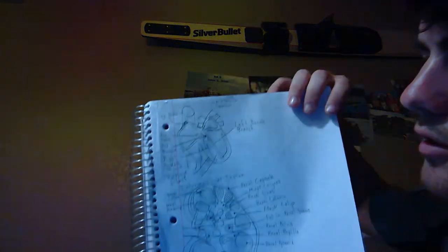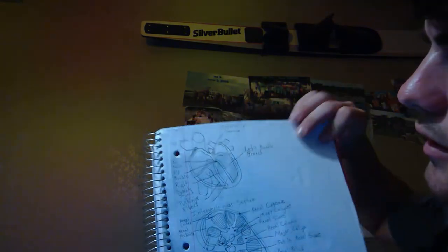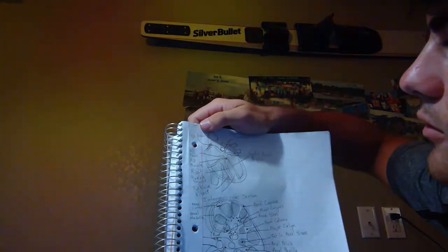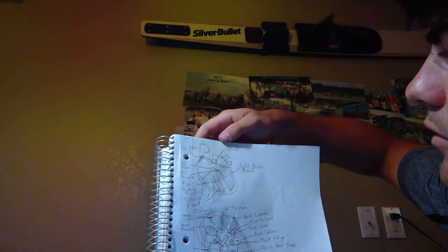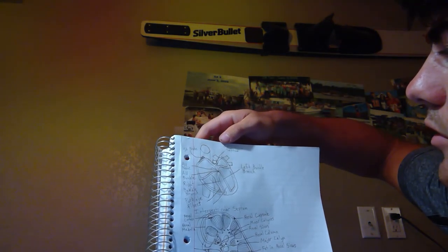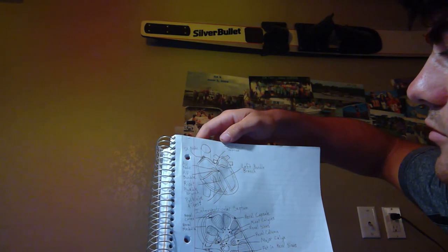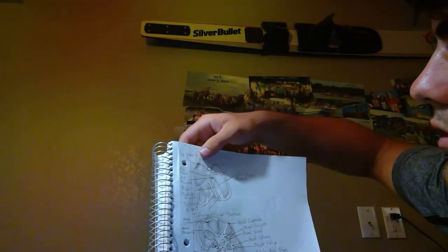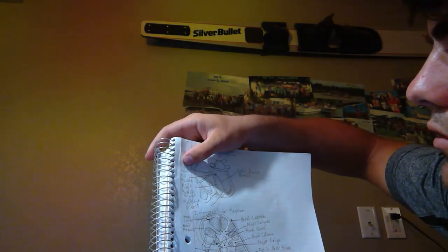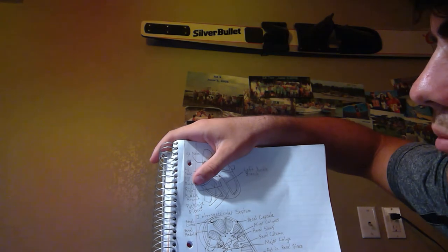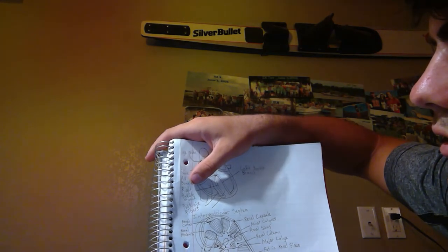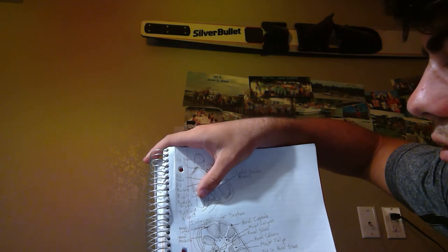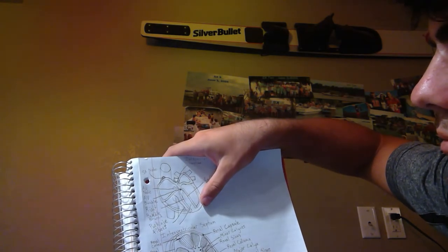Here's my drawing of the heart. I have the SA node, the interatrial septum, the left bundle branch, AV node, AV bundle, right bundle branch, Purkinje fibers, and interventricular septum.